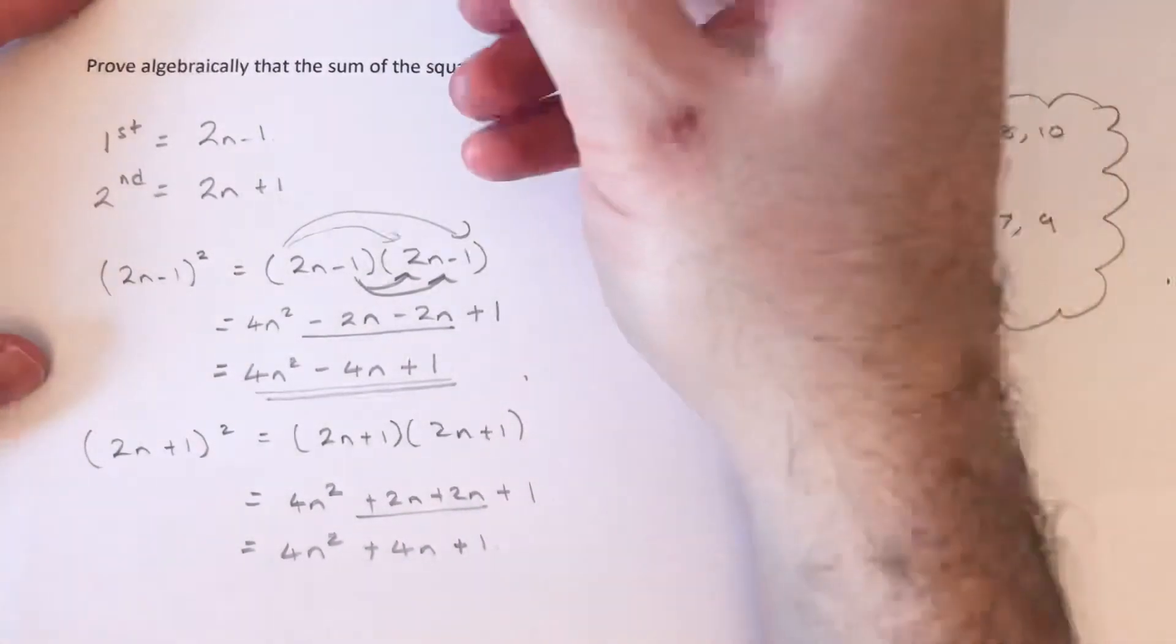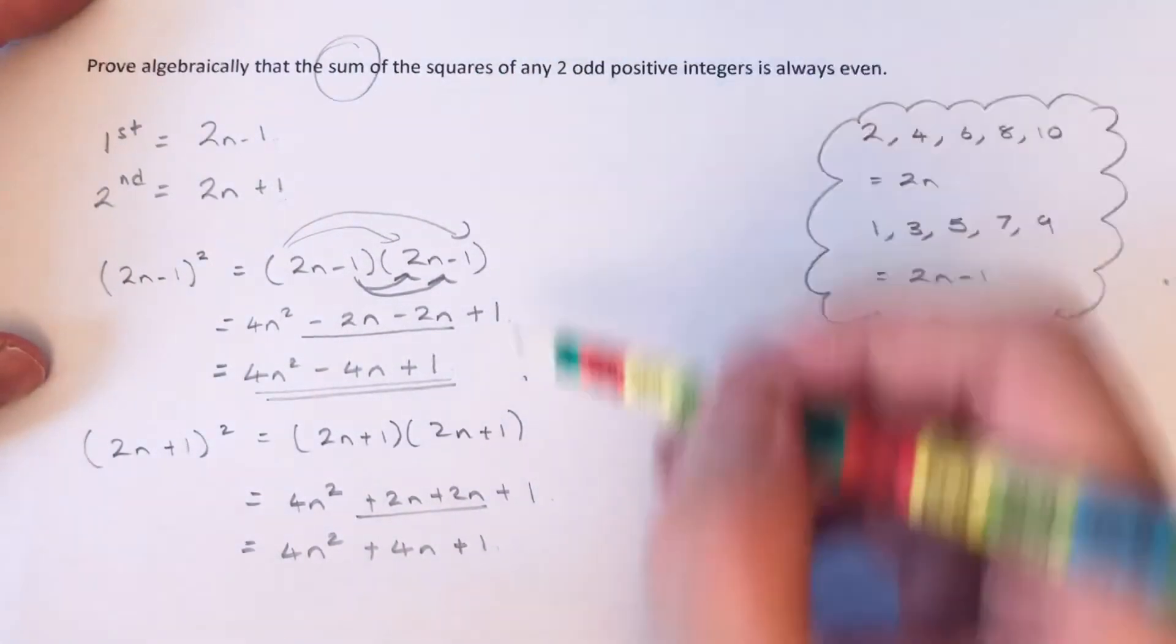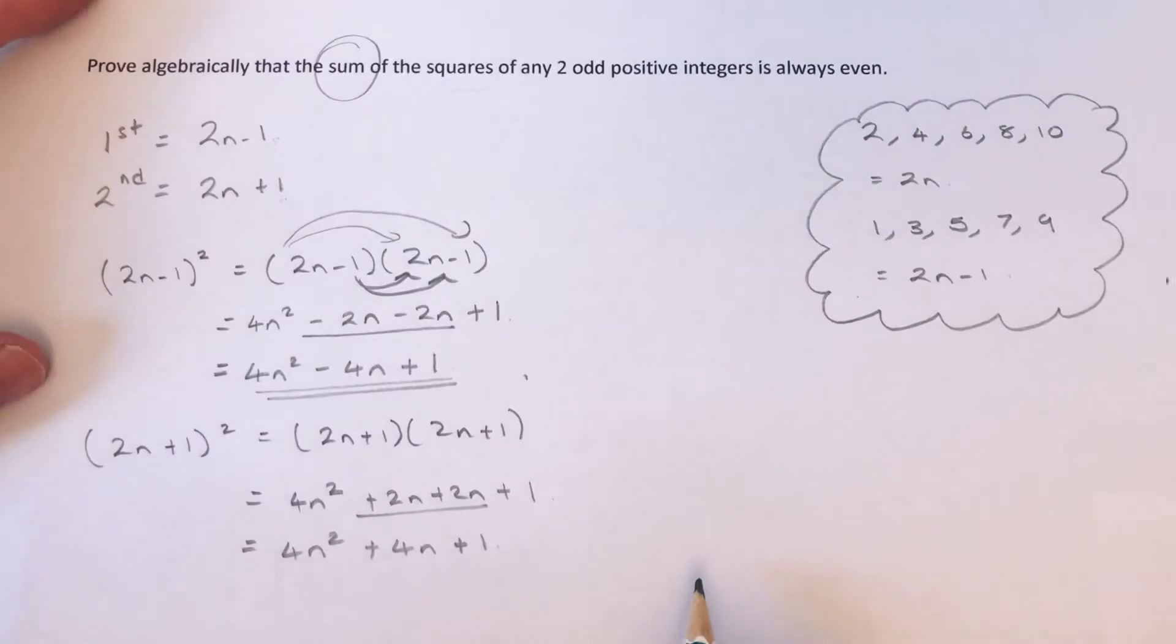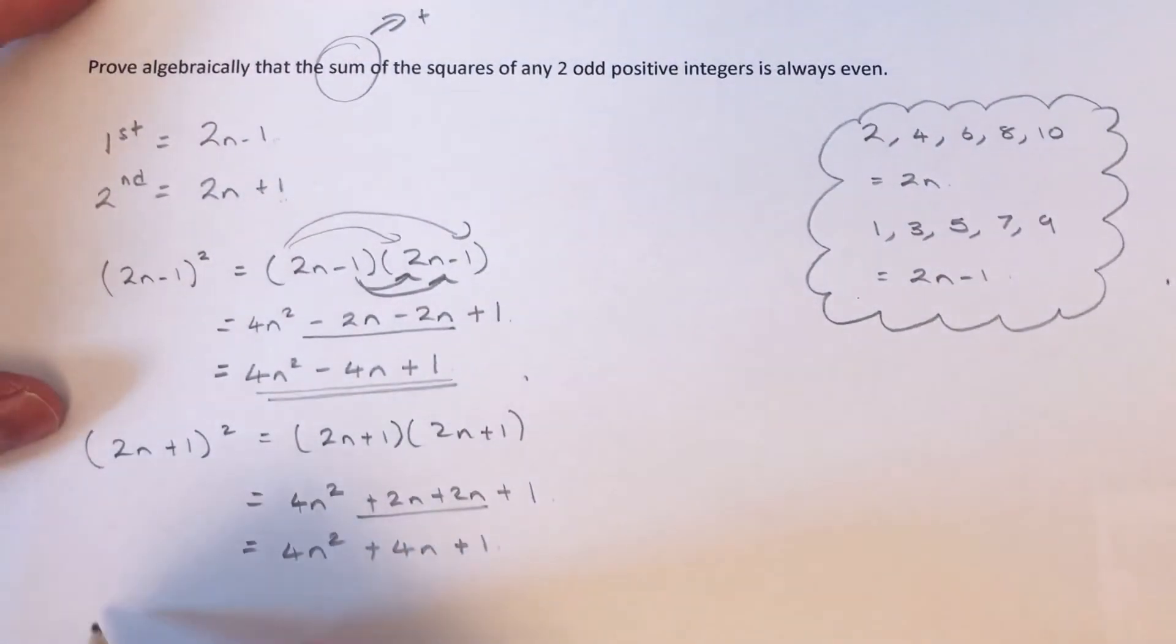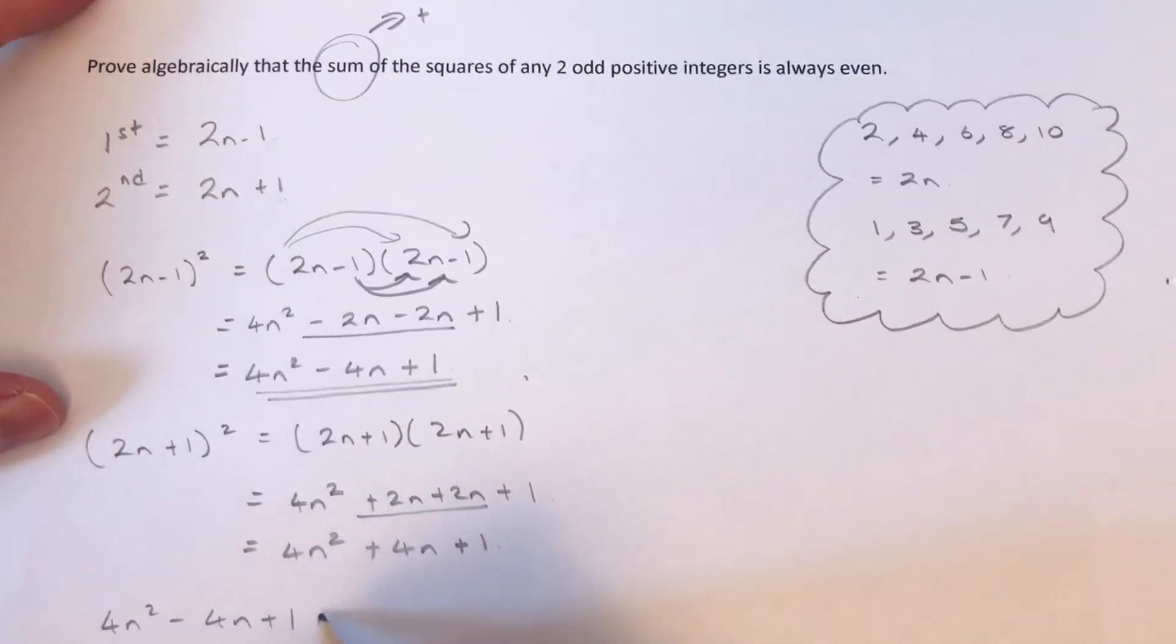Now what we need to do next is add these two answers together because sum means add. So we've got 4n squared minus 4n plus 1 plus 4n squared plus 4n plus 1.